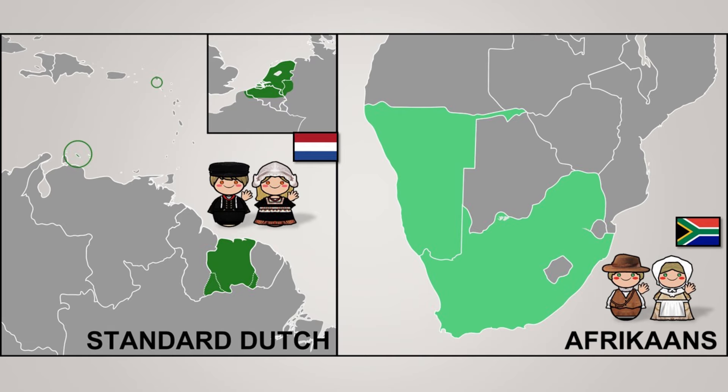However, Afrikaans has a considerably more regular morphology, grammar, and spelling. There is a high degree of mutual intelligibility between the two languages, particularly in written form. Research suggests that mutual intelligibility between Dutch and Afrikaans is better than between Dutch and Frisian, or between Danish and Swedish. Mutual intelligibility tends to be asymmetrical, as it is easier for Dutch speakers to understand Afrikaans than for Afrikaans speakers to understand Dutch.